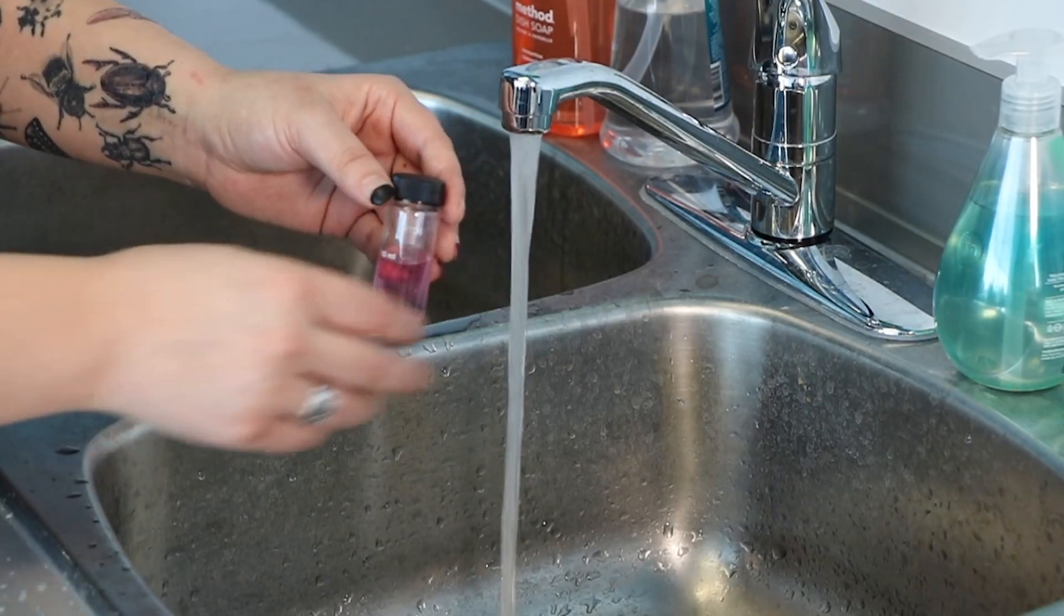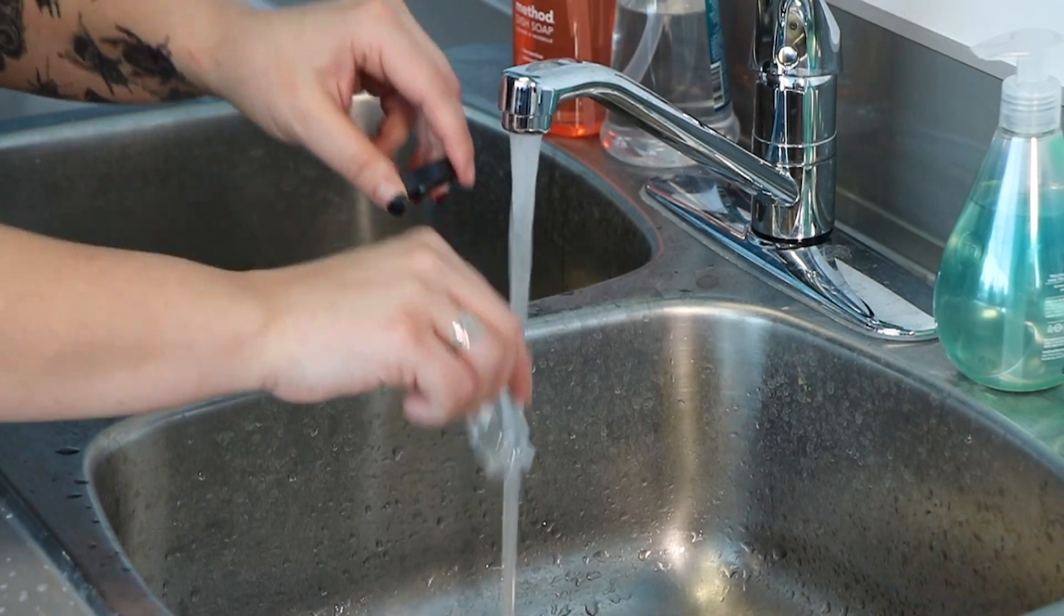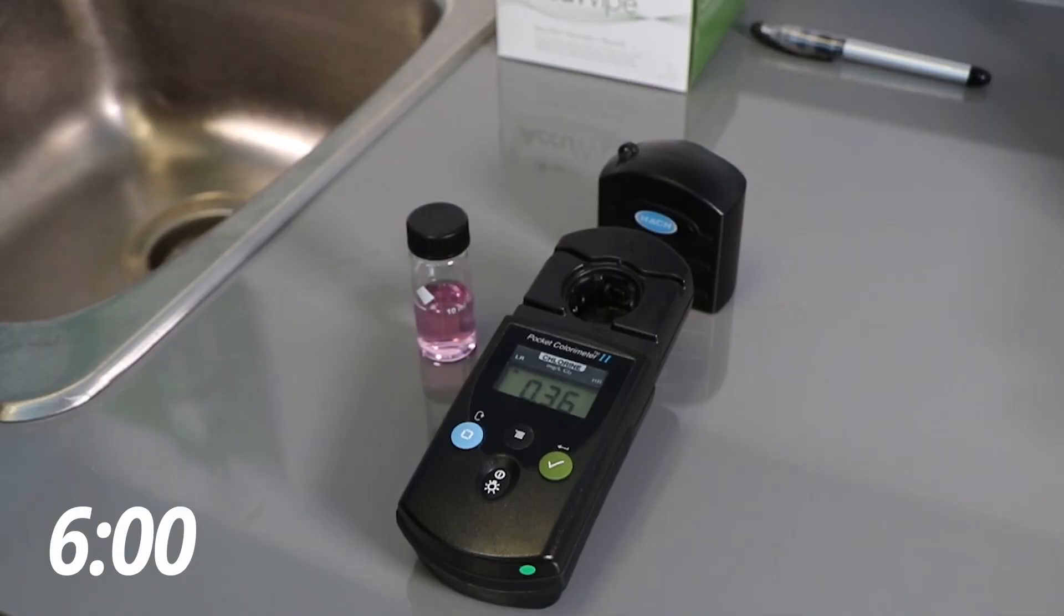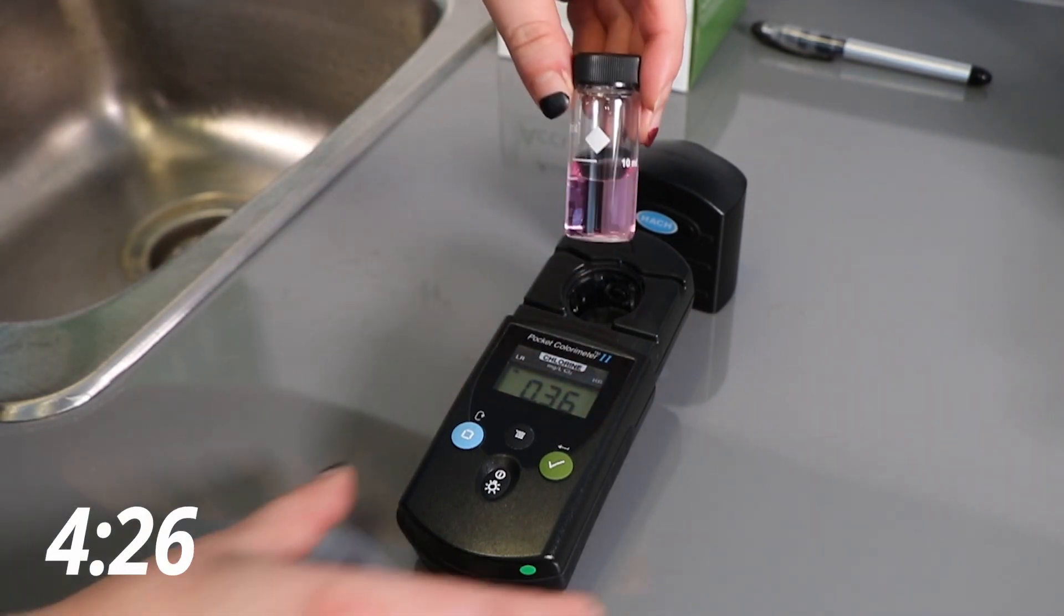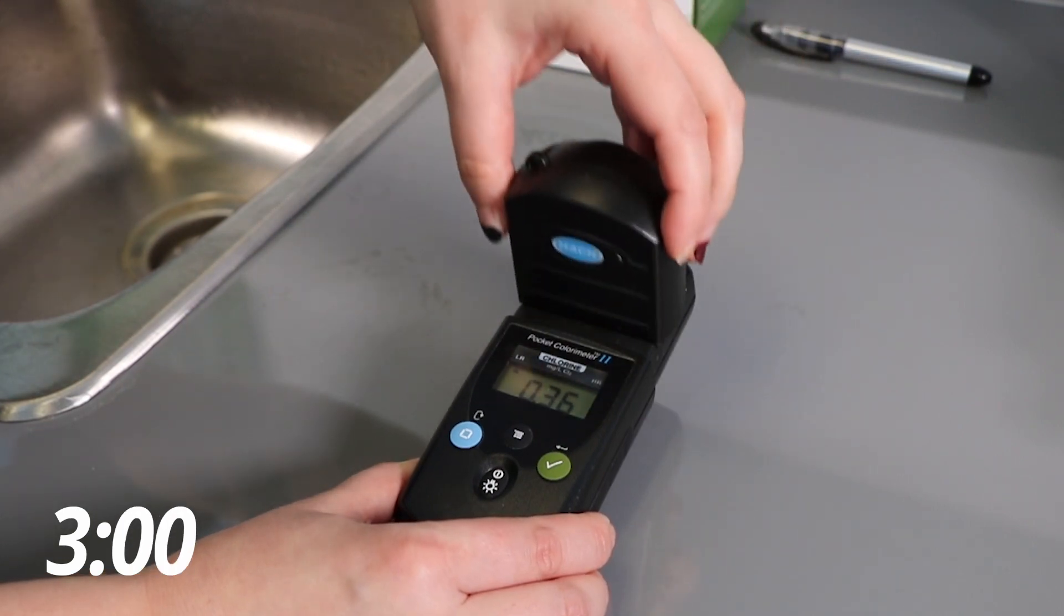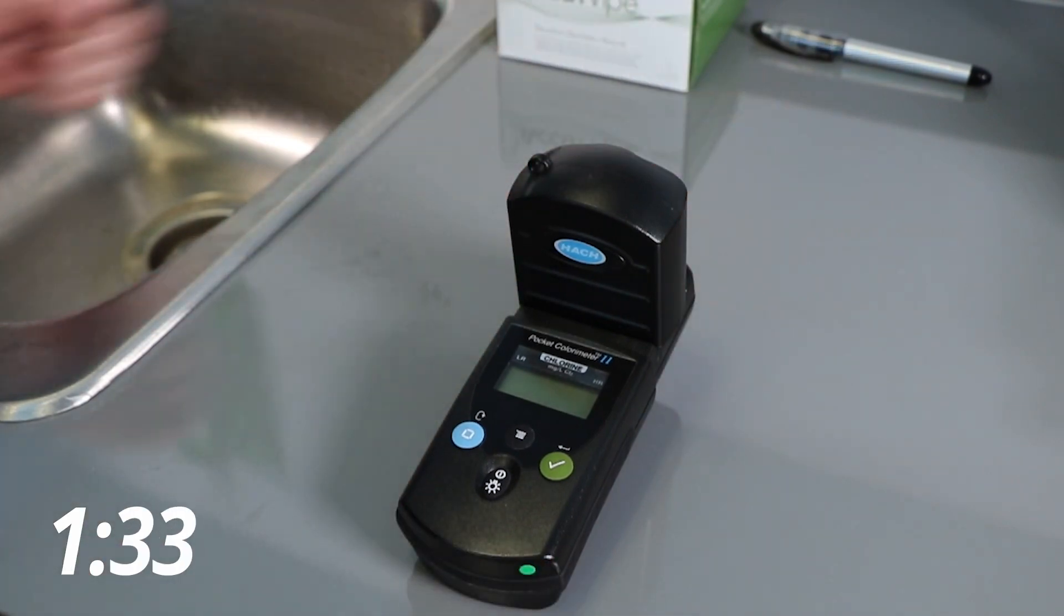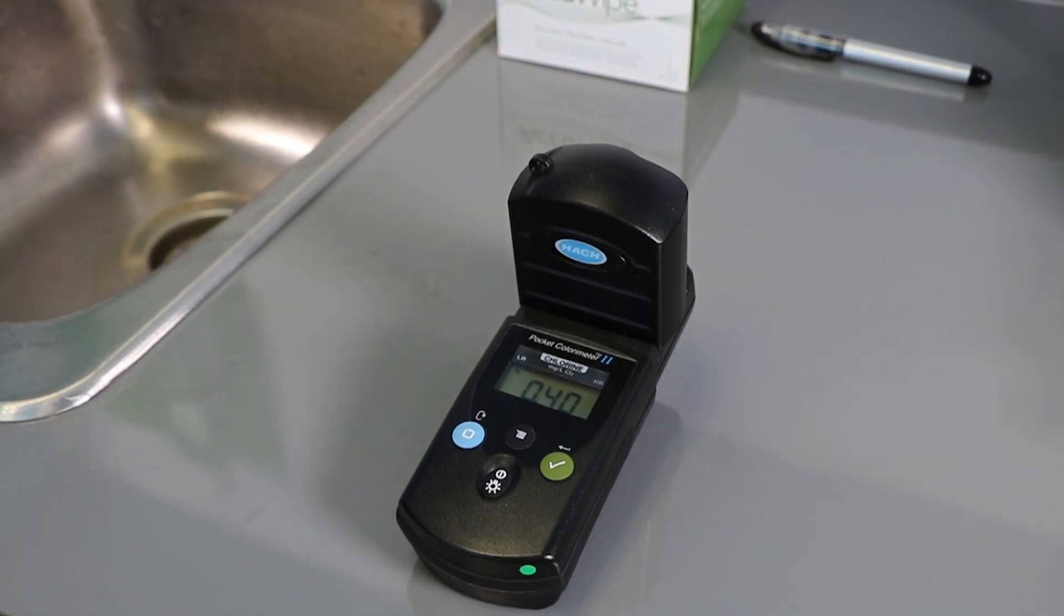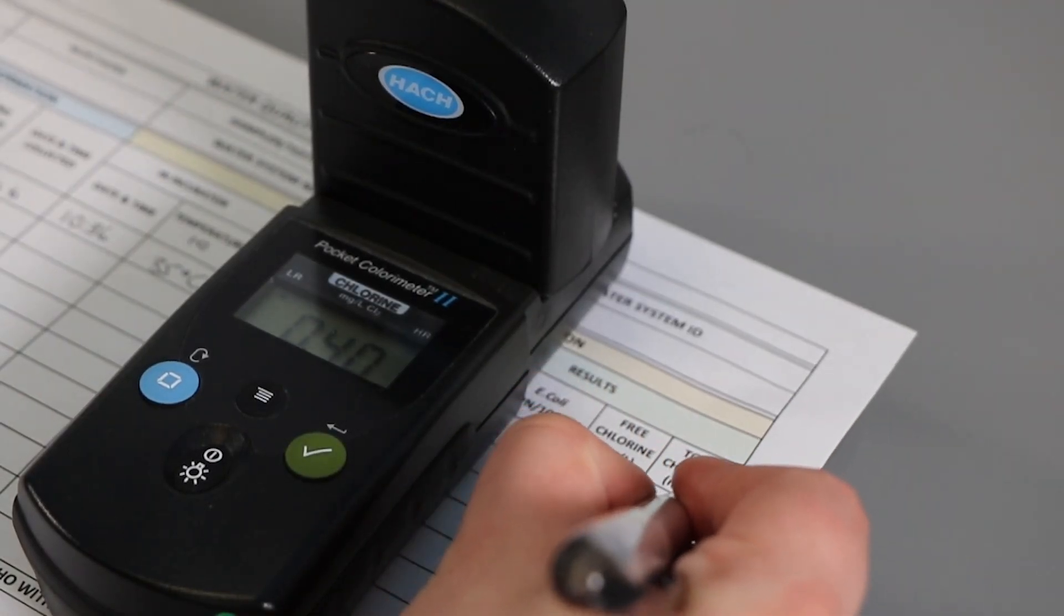When finished, thoroughly rinse the sample vials immediately several times. For total chlorine, you need to wait 3-6 minutes after adding the DPD to the sample water. Remember, the instrument now displays the chlorine residual in milligrams per liter. Record the number on your field sample data sheet.